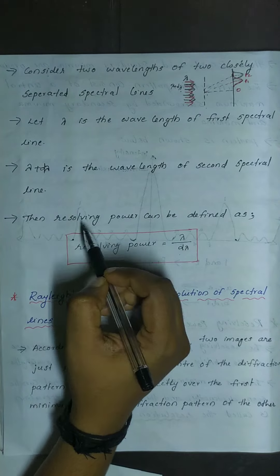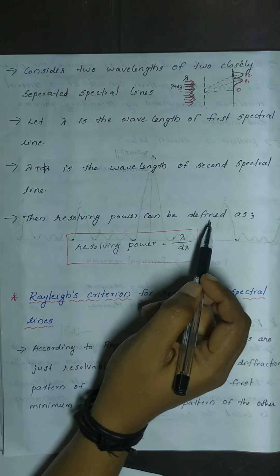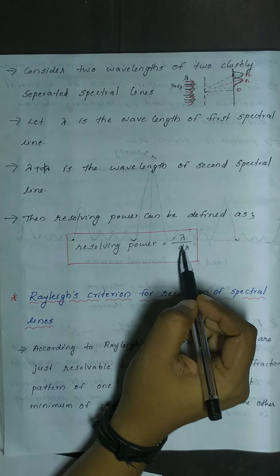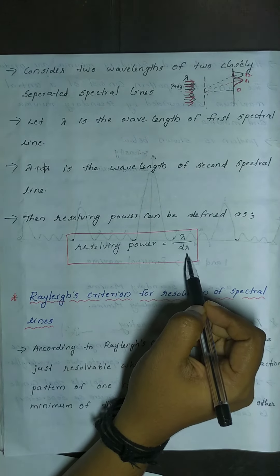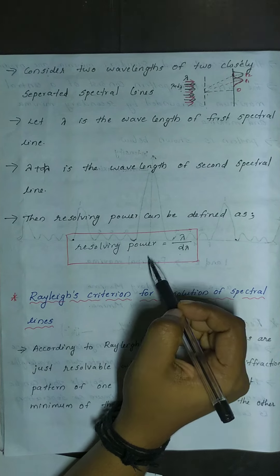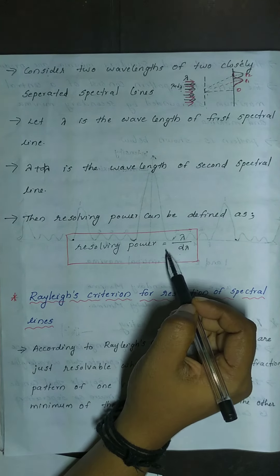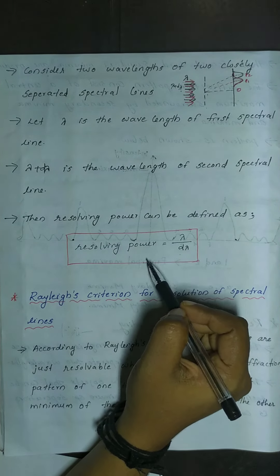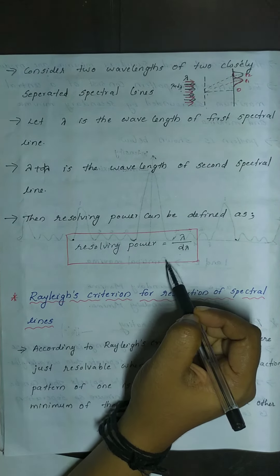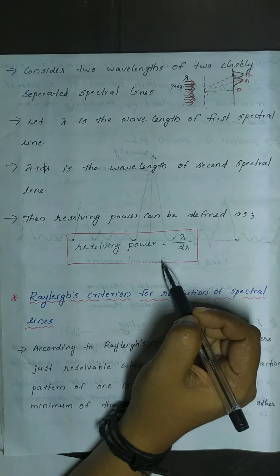The resolving power of the grating is lambda by d-lambda. The resolving power can be defined as lambda divided by d-lambda, and the expression for resolving power of the grating is discussed in this topic.